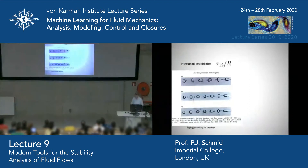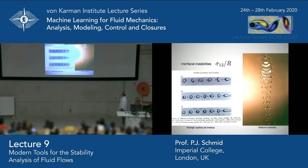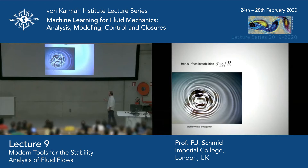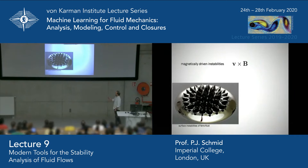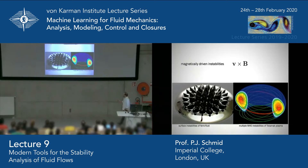Interfacial instabilities include the very classical breakup of a capillary jet into little drops, which can be written as an instability of a columnar jet. Two colliding jets make a fishbone instability, also interfacial in nature. Free surface instabilities include capillary wave propagation on the free surface. You can go to non-traditional fluid applications — sand dune ripple formation can be described as an instability. Magnetically driven instabilities: a ferrofluid has surface instabilities when you put a magnet underneath, very popular in science museums.